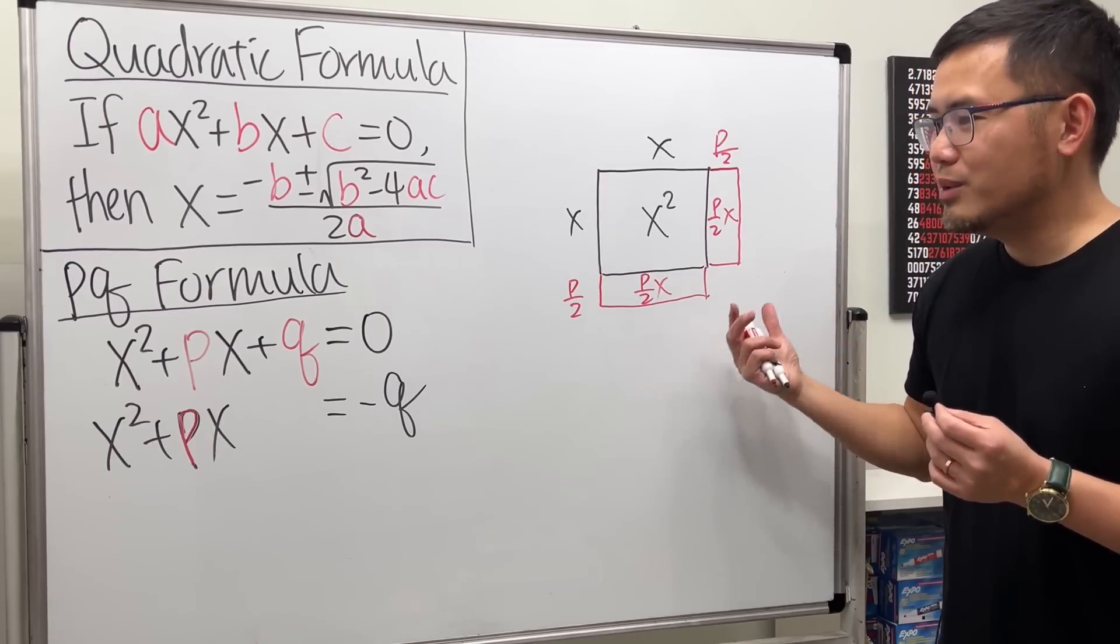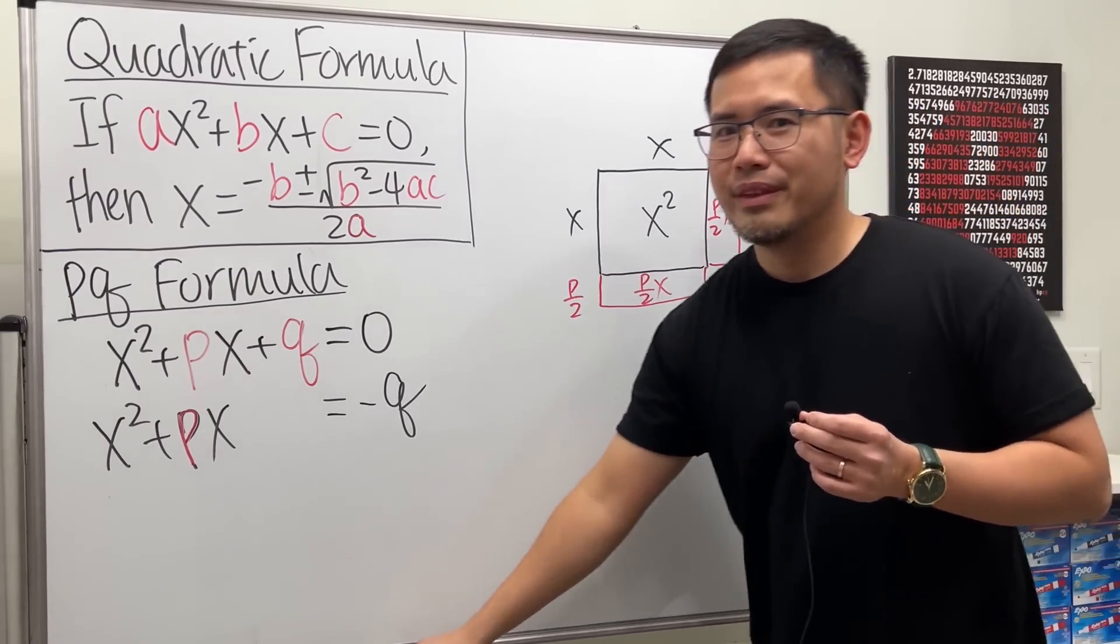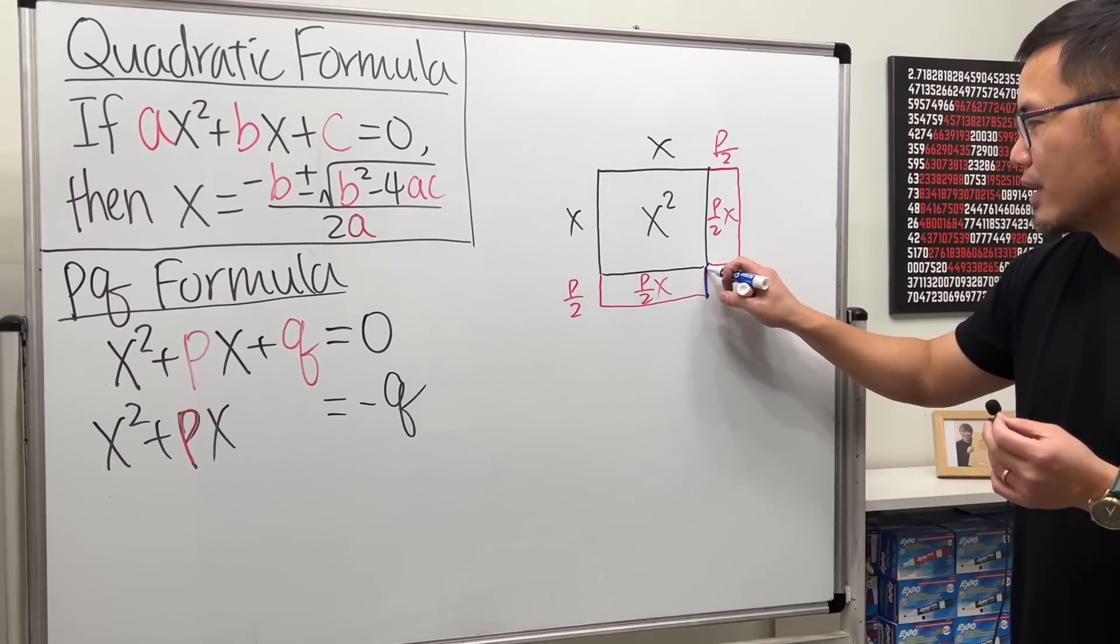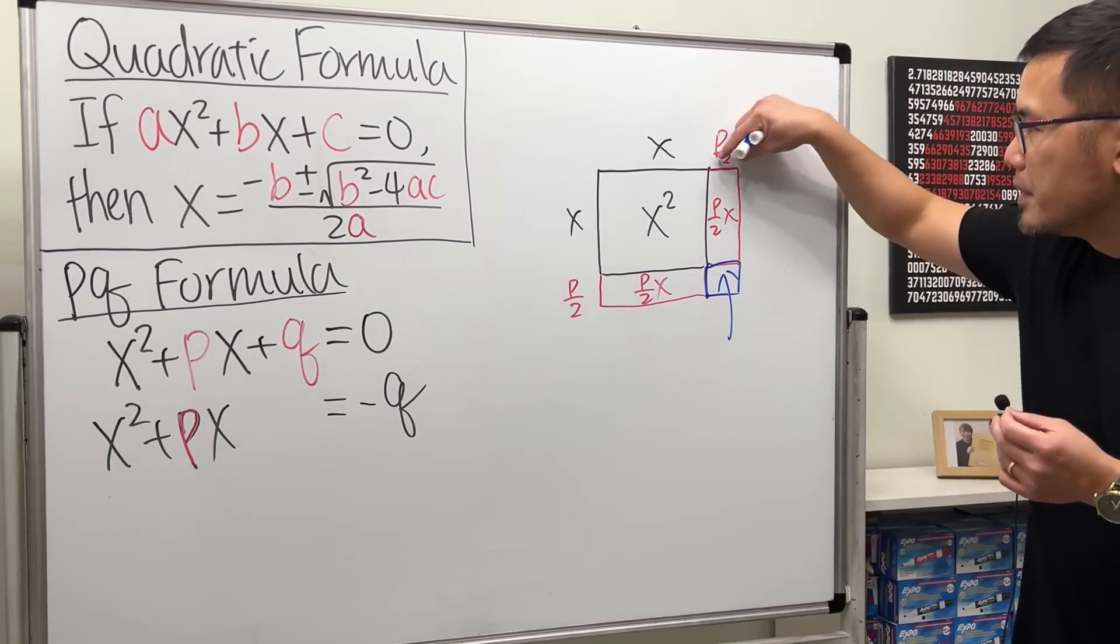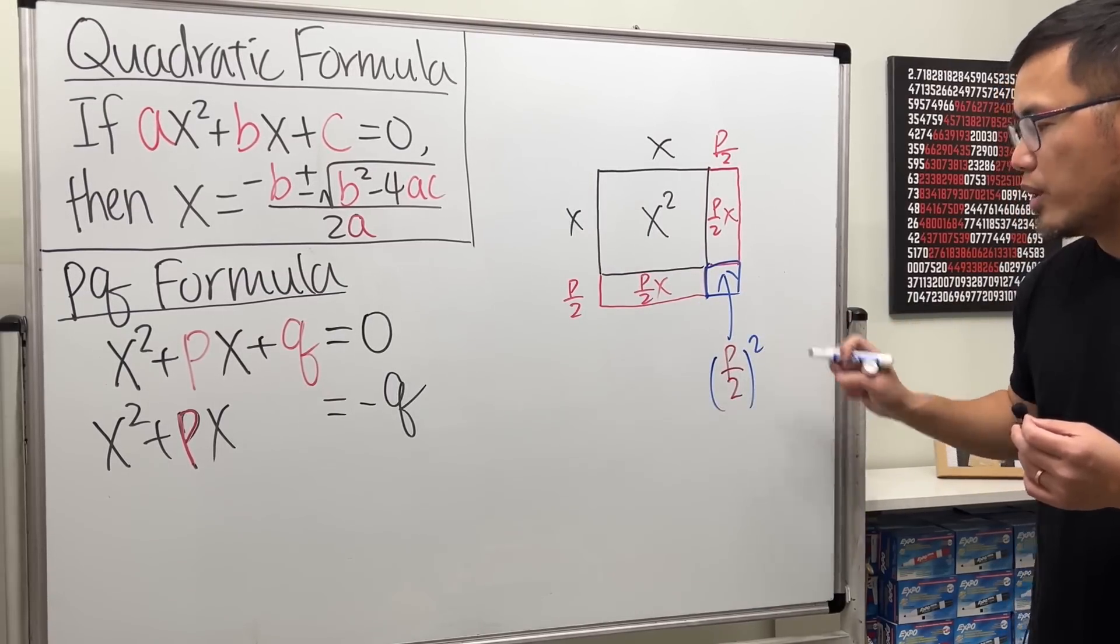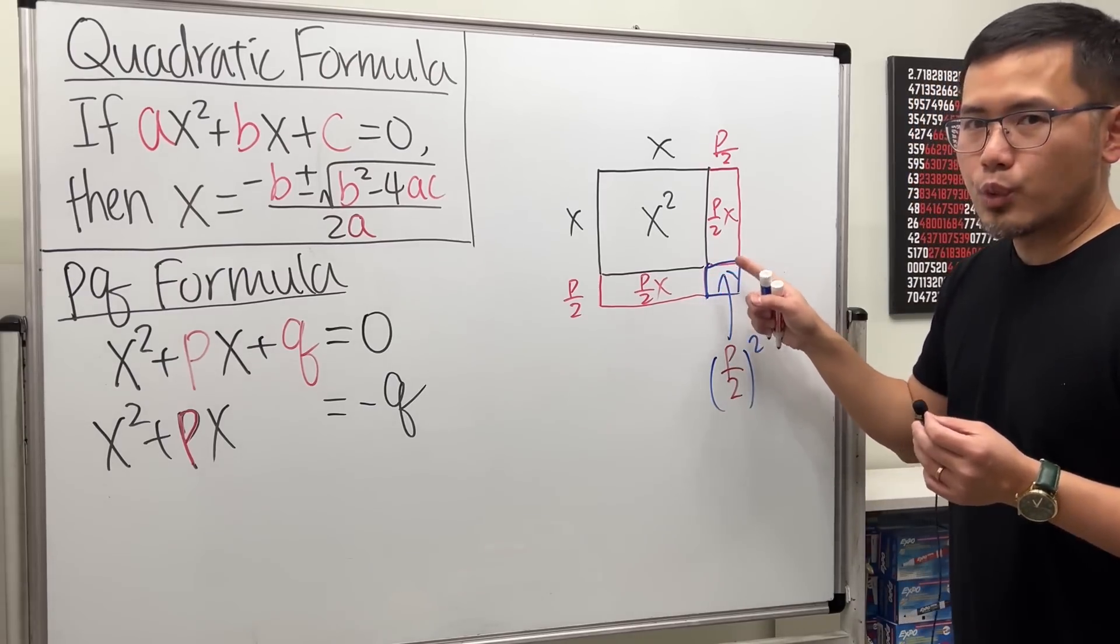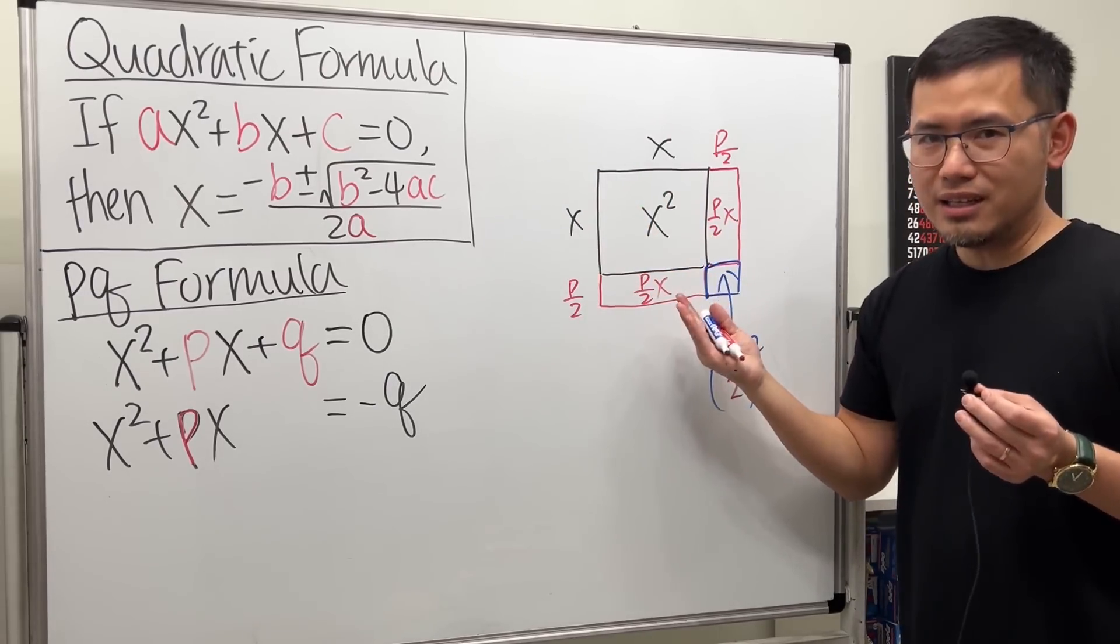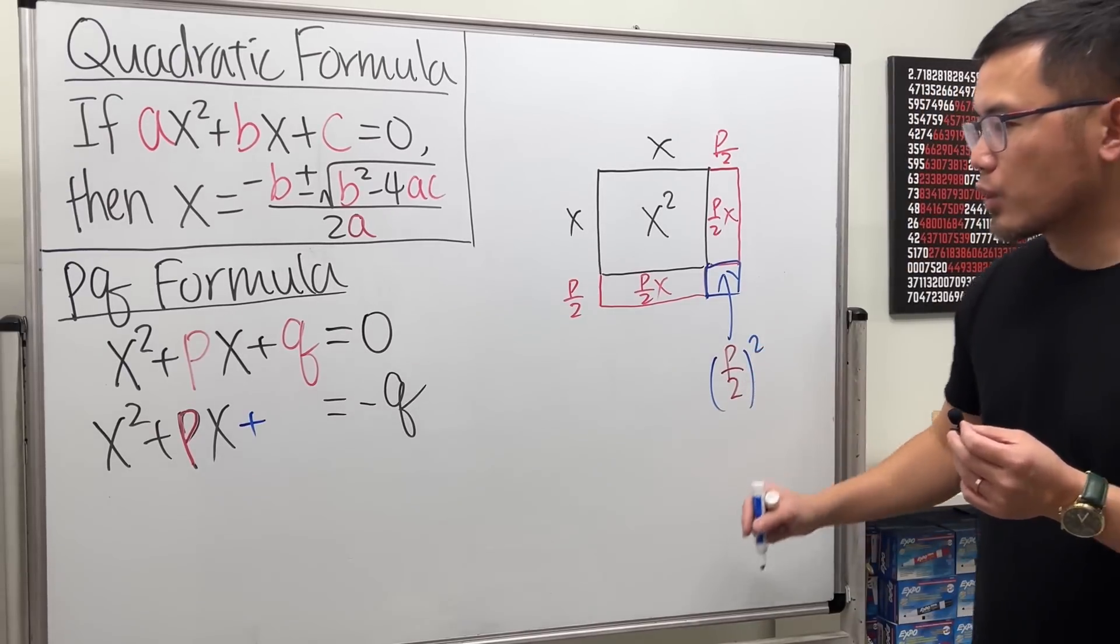And if you do it in this way, you can see that we are missing a corner. And what's that corner? It's a square. What's the area of this square? P over 2, P over 2. So, I need to have P over 2 squared. So, imagine if I just add the blue square right here, then I will complete the square.